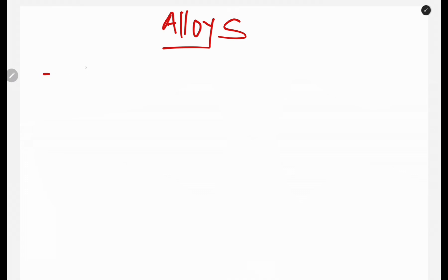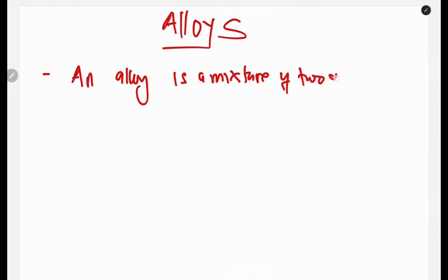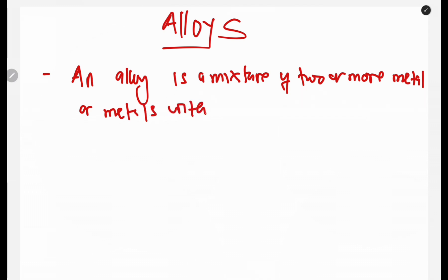The first question is: what is an alloy? By definition, an alloy is a mixture of two or more metals, or metals with non-metals. That is what we call an alloy. So if you are asked to define an alloy, that is how you simply do it.